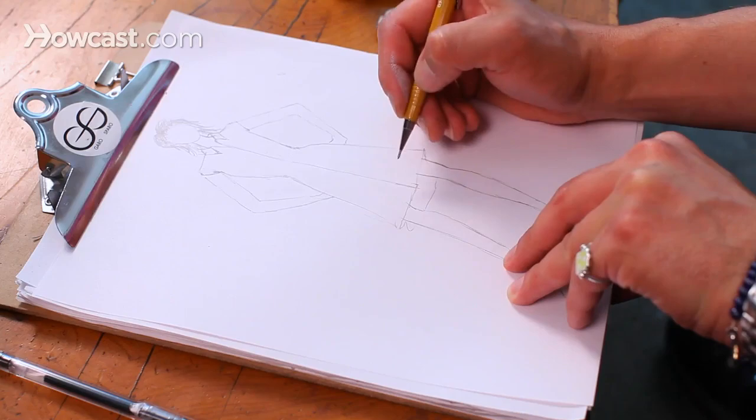You go straight down the front of the body. First, you're going to make your line for the placket in which the buttons are going to be buttoning.